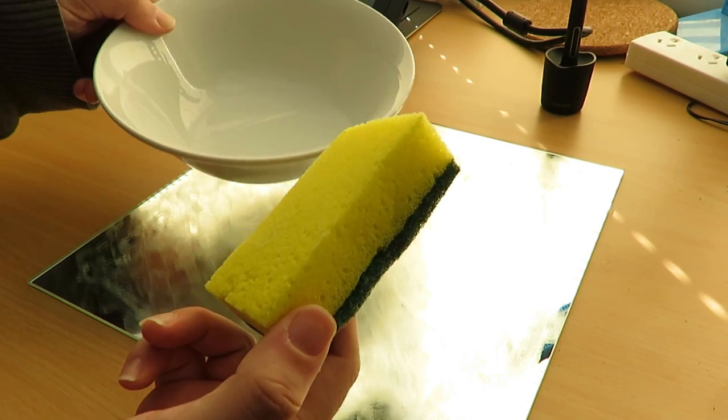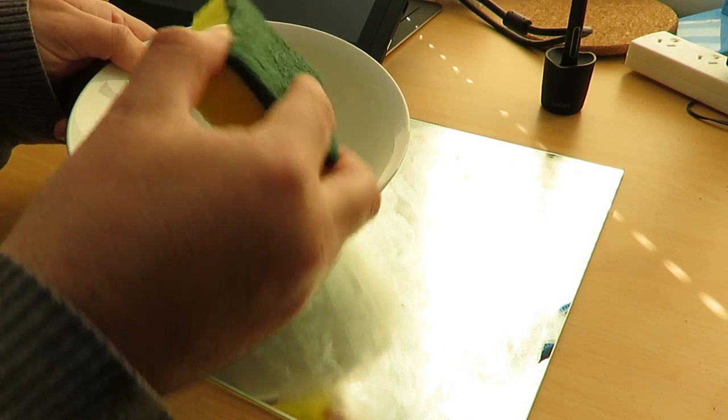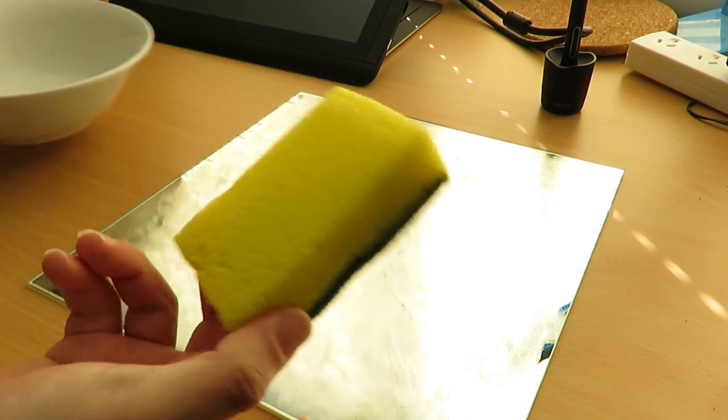Once you have a nice and even coating of glue stick on the print bed, take your sponge and dip it into some water, then just lightly tap all over the bed.